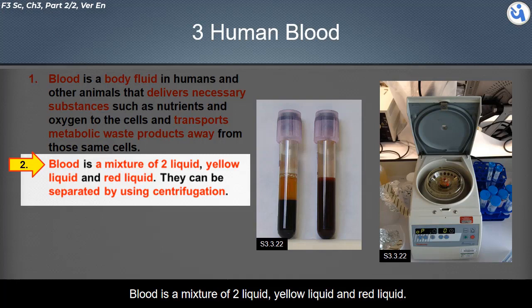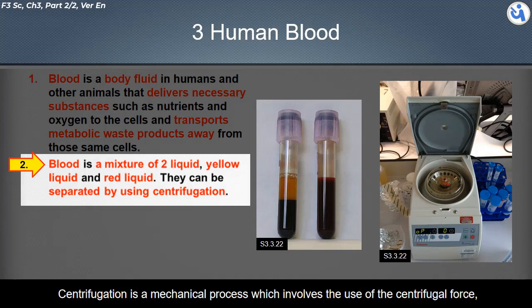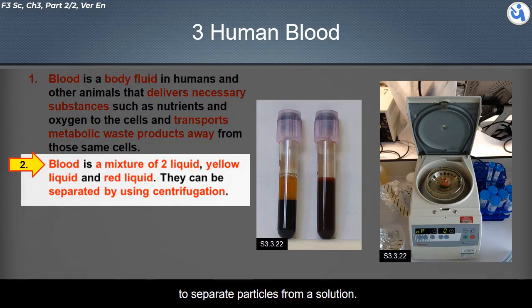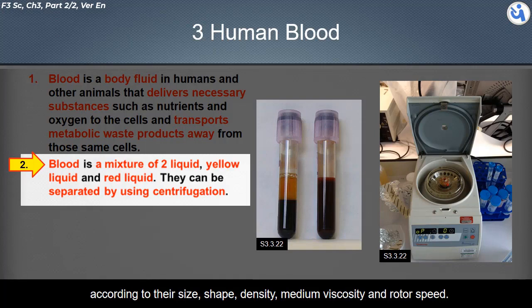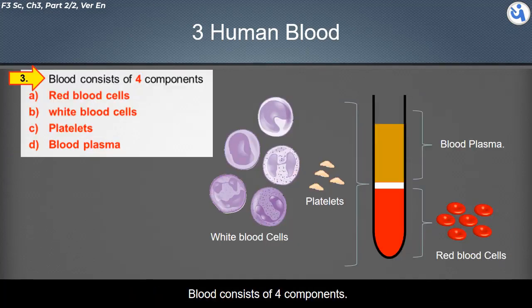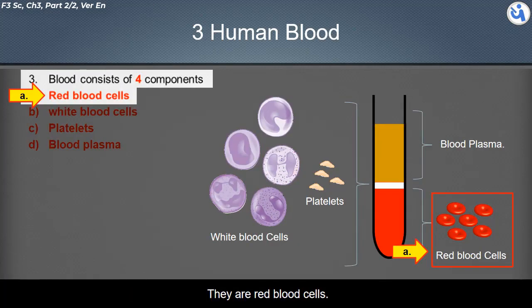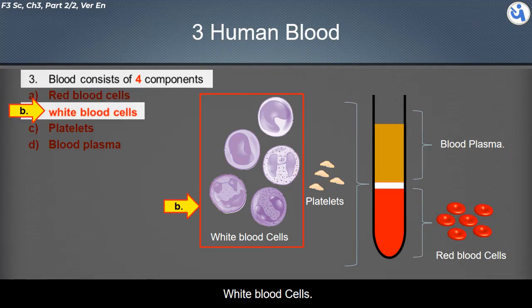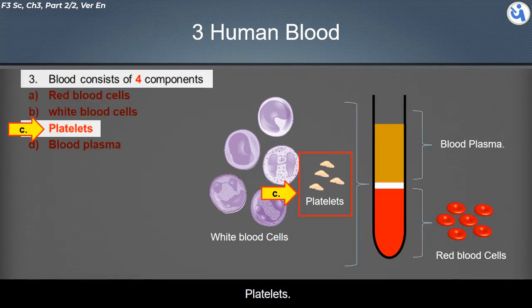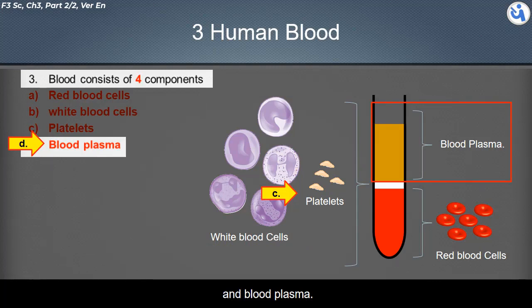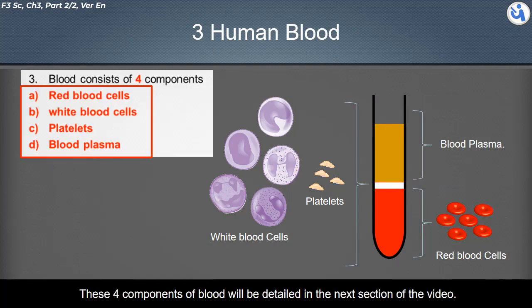These two liquids can be separated by centrifugation. Centrifugation is a mechanical process which involves the use of centrifugal force to separate particles from a solution according to their size, shape, density, medium viscosity, and rotor speed. Blood consists of four components: red blood cells, white blood cells, platelets, and blood plasma.